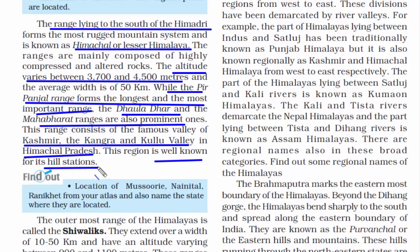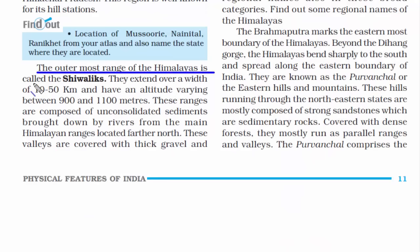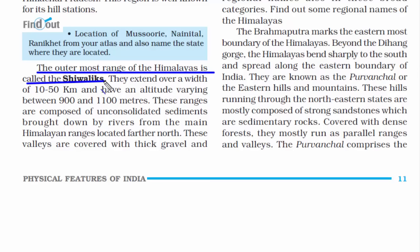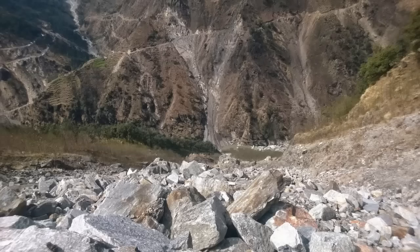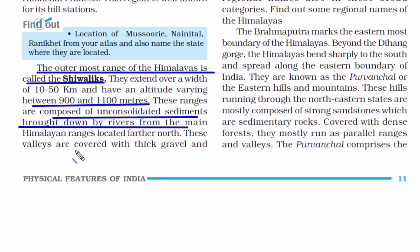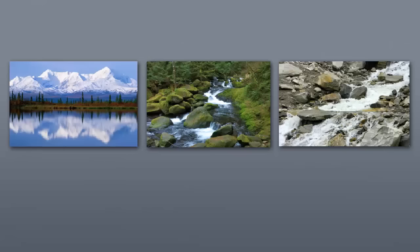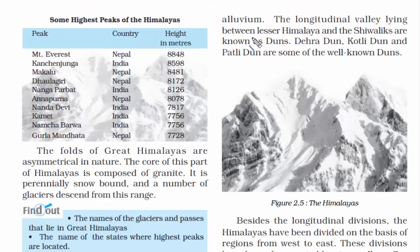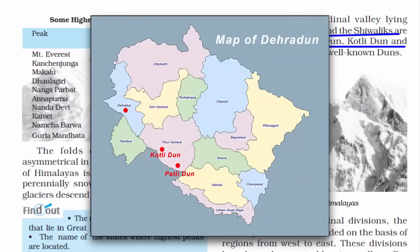The third and outermost range of the Himalayas is called the Shivalik. Its width is 10 to 50 kilometers and the peaks are quite low, at 900 to 1,100 meters. In this range you will find mostly sedimentary rocks brought down by rivers from the main Himalayas — fast-flowing rivers carrying huge chunks of rocks and boulders. This range is also rich in alluvial soil. Famous duns like Dehradun, Kotlidun, and Patlidun are located in this range.